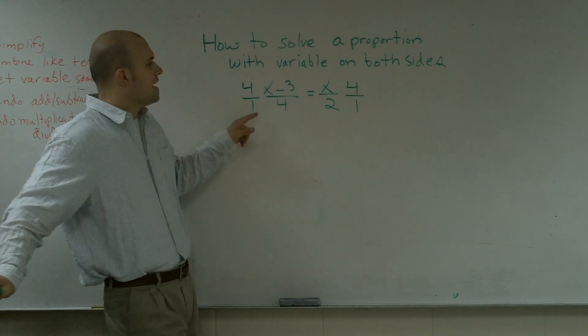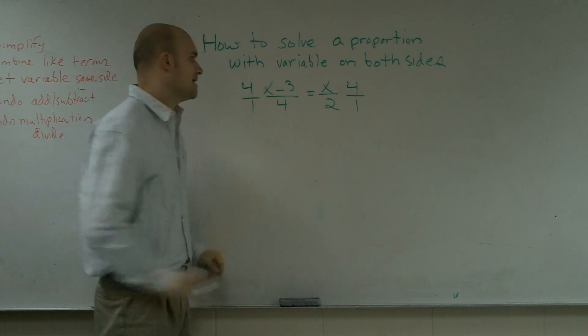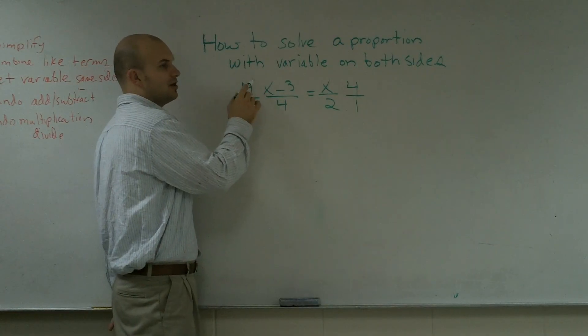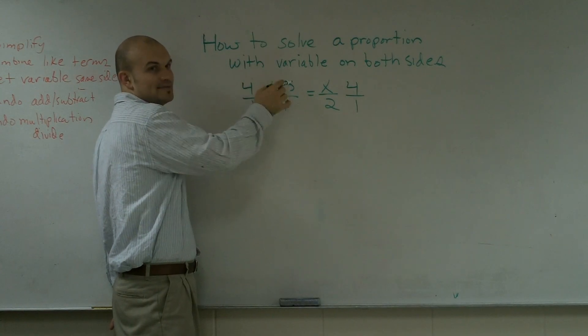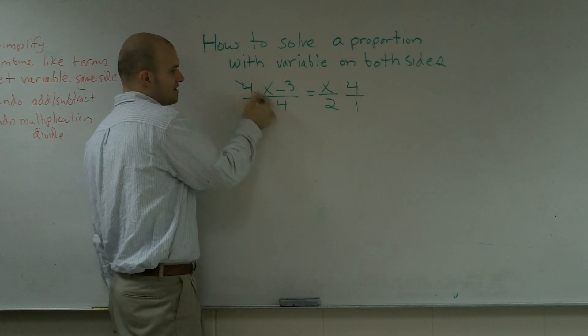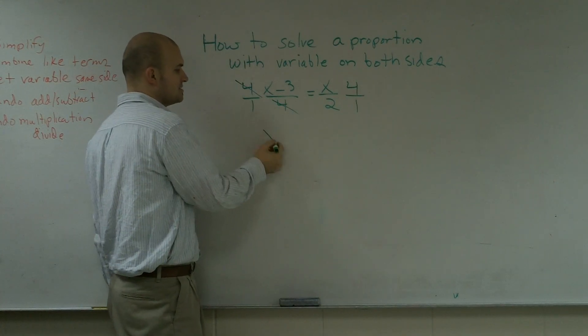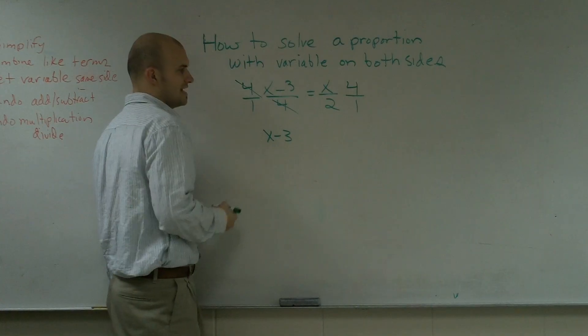Now, on this problem, my fours are going to cancel out. However, just a side note, if the fours didn't cancel out, you have to make sure you multiply the four times the x and the four times the negative three. But fortunately for us, our fours cancel out, and anything divided by one just becomes what it originally was, x minus three.